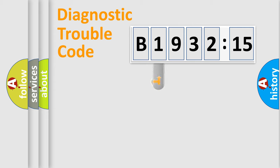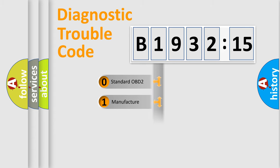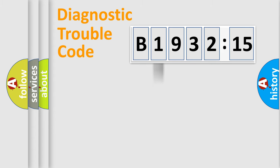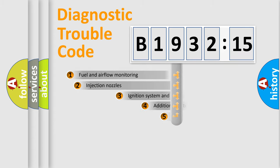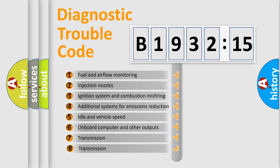Powertrain. Body. Chassis. Network. This distribution is defined in the first character of the code. If the second character is expressed as zero, it is a standardized error. In the case of numbers 1, 2, or 3, it is a more specific expression of a car-specific error.